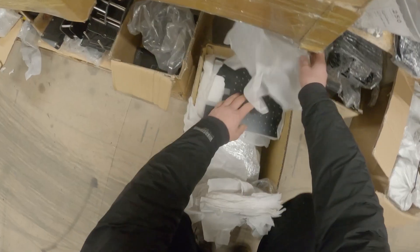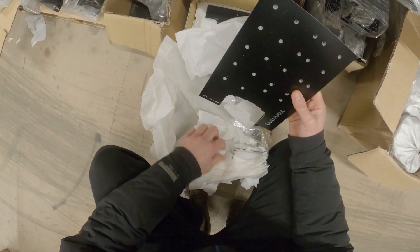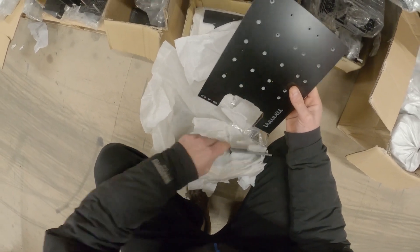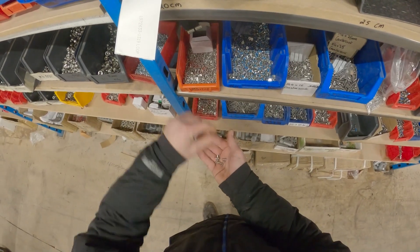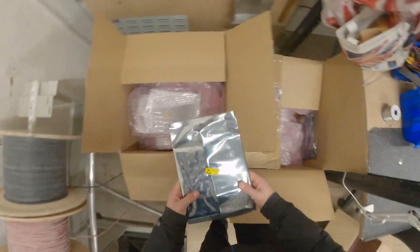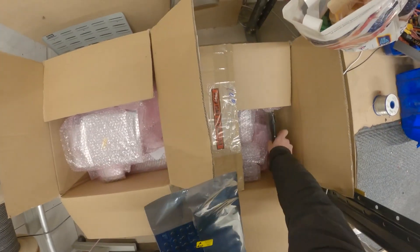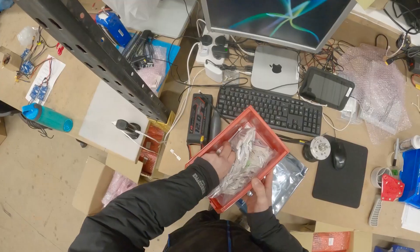With all that out the way, let's get into how to assemble the pack. In this tutorial we'll be covering the 18650 pack. The 21700 pack has some differences, though for the most part the assembly is the same. Check the 21700 manual on the website for more details.